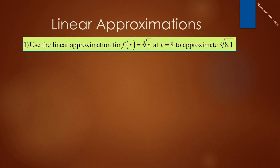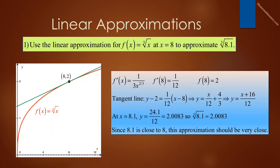Problem 1 reads, use the linear approximation for f of x equals the cube root of x at x equals 8 to approximate the cube root of 8.1. As we can see on the graph, we have the red curve f of x equals the cube root of x. And we have the point on that curve 8, 2. We also see the tangent line. We want the equation of that line. So, we know that f prime of x is equal to 1 over 3x to the 2 thirds. And therefore, f prime of 8 is equal to 1 twelfth. We also know that f of 8 is equal to 2. So, our tangent line is simply y minus 2 is equal to 1 twelfth quantity x minus 8. This gives us y is equal to x over 12 plus 4 thirds. And I choose to write this as y equals x plus 16 over 12.